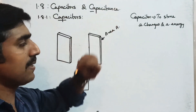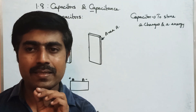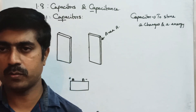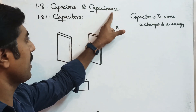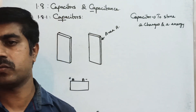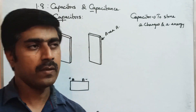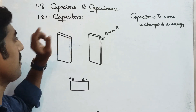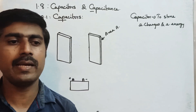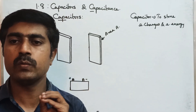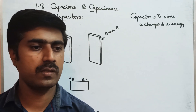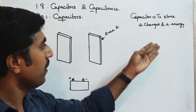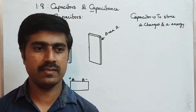So capacitance is one of the qualities of the capacitor. Based on the capacitance only, we can store the electric charges inside the capacitor. The definition: a capacitor is used to store electric charges - positive charges and negative charges - and electric energy.